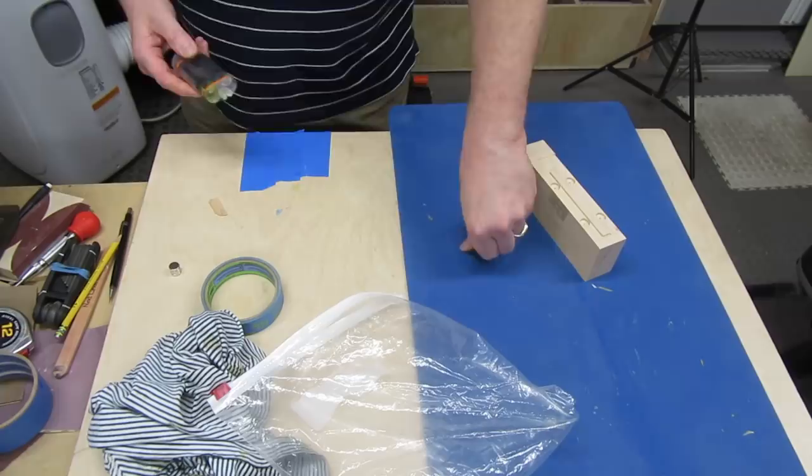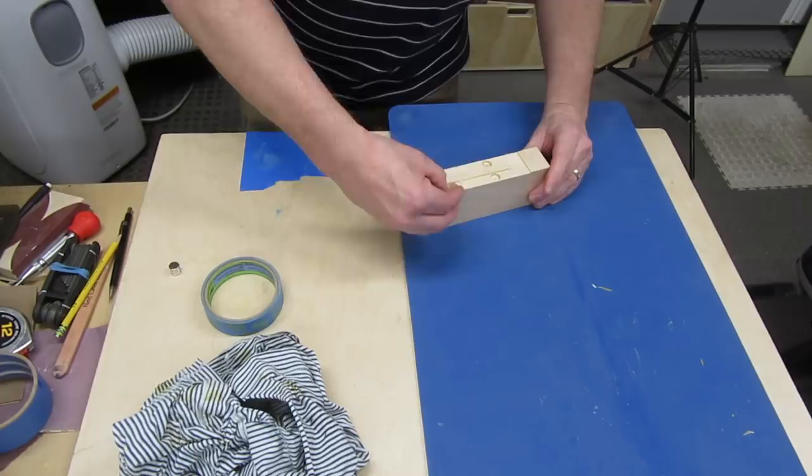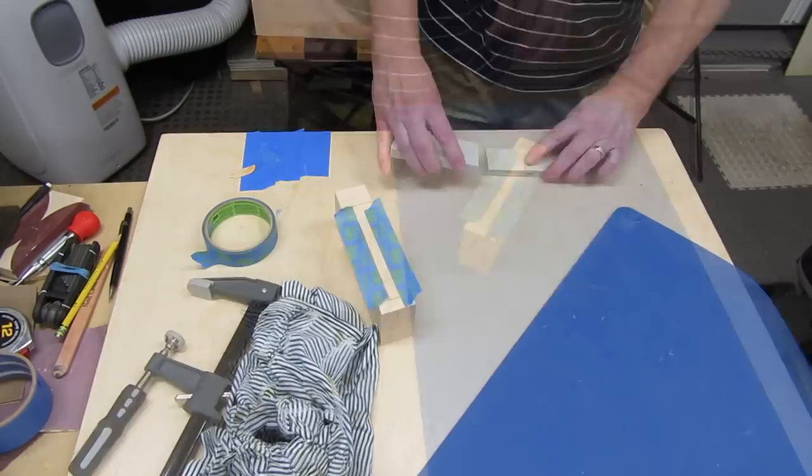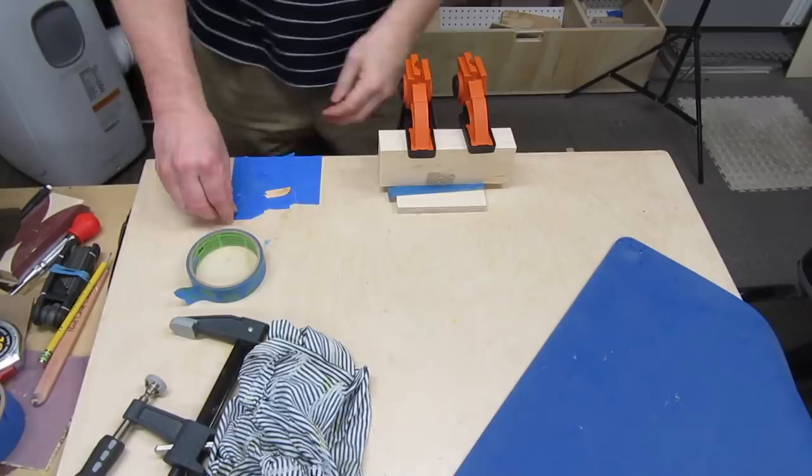I know some people have good luck with CA glue and activator, but that just never seems to work for me. I put tape over the magnets, then used a couple of pieces of scrap wood against the tape and clamped everything down. I like using painter's tape to mix the epoxy glue because cleanup is a breeze.